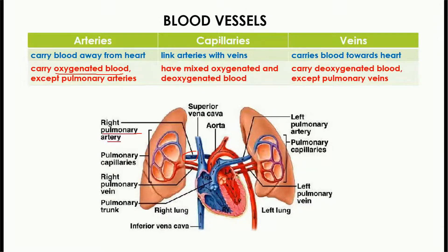When we talk about capillaries, they have mixed oxygenated and deoxygenated blood. Here you can see the capillaries present inside the lungs: this part of the capillaries contains deoxygenated blood because it is blue in color, while this part here contains oxygenated blood because it is red in color.